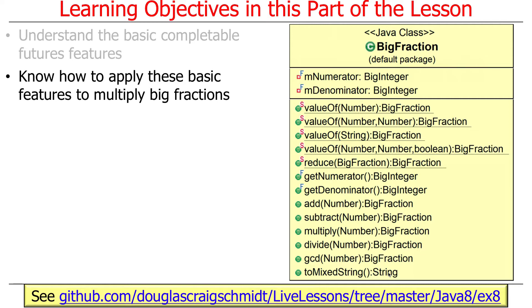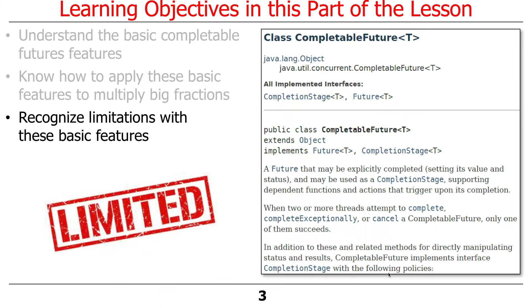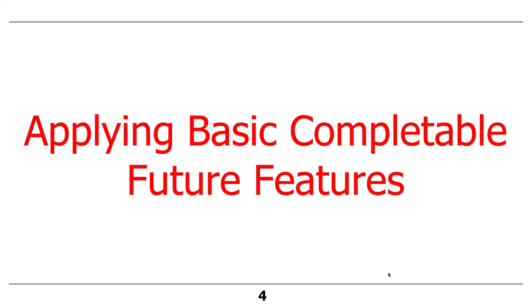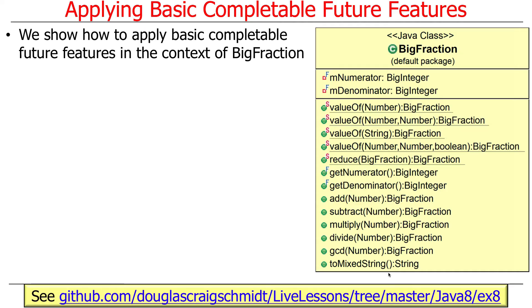And this example is also here, so this is the big fraction example. After I show you how to use basic features, you'll see why they're so limited, and we'll talk about why they're limited, which of course exists to motivate the need for the more advanced features, which are much cooler. So let's talk about the basic features.